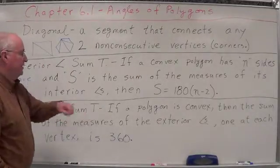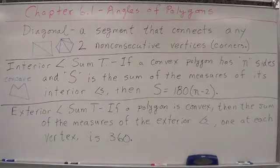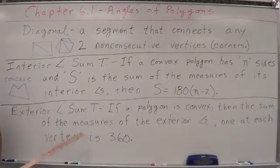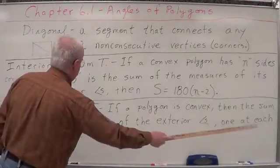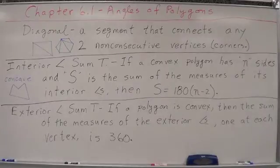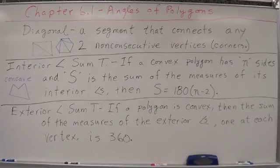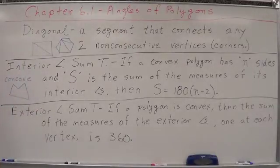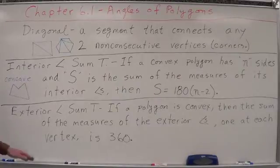Exterior Angle Sum Theorem: if we've got interior angles, we also have exterior angles. This one is real simple. If a polygon is convex, then the sum of the measures of the exterior angles — one at each vertex — is 360 degrees. That's it. The sum of all the exterior angles of a convex polygon is 360. It doesn't matter how many sides it has — three sides, four sides, five sides, 100 sides, 200 sides — the sum of all the exterior angles, one at each vertex, is 360 degrees.